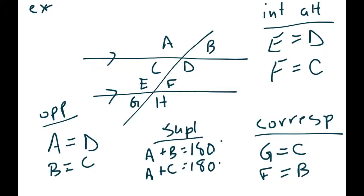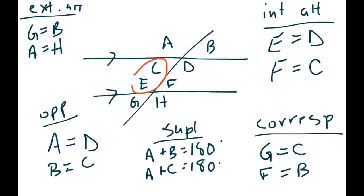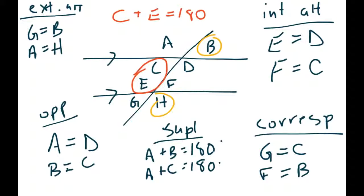For exterior alternate angles — on the outside — G and B are exterior alternates and are equal, and A and H are exterior alternates and are equal. There's also another pattern: two interior angles that are side by side, like E and C. Since E and G are supplementary and A and C are supplementary, C and E also add up to 180. The same applies to exterior co-interior angles. These come up less often, but because the numbers repeat you can see lots of patterns. That's where we'll stop.